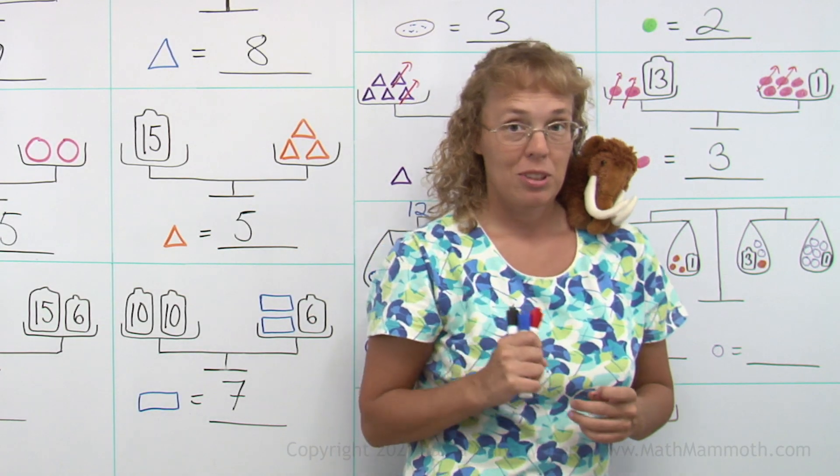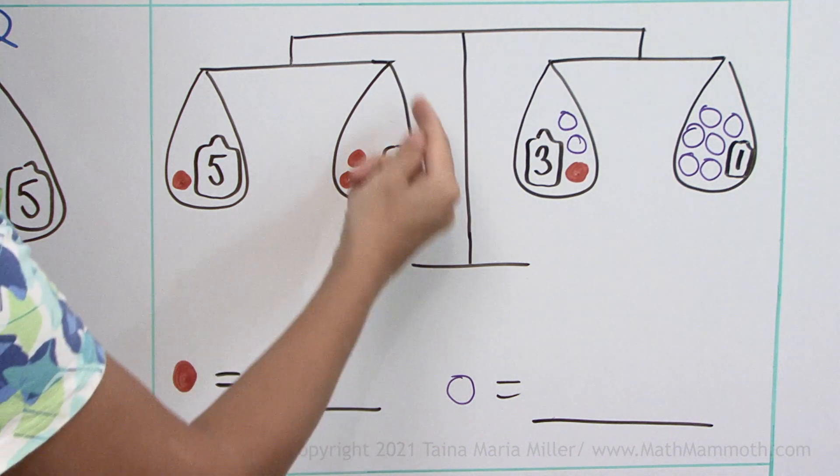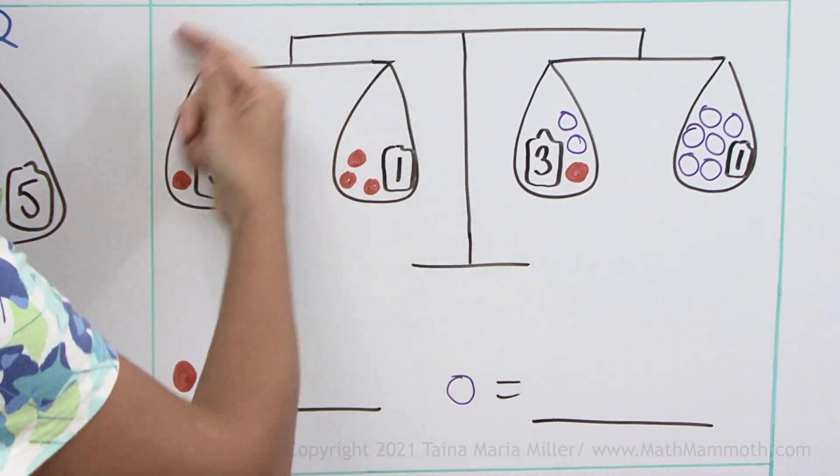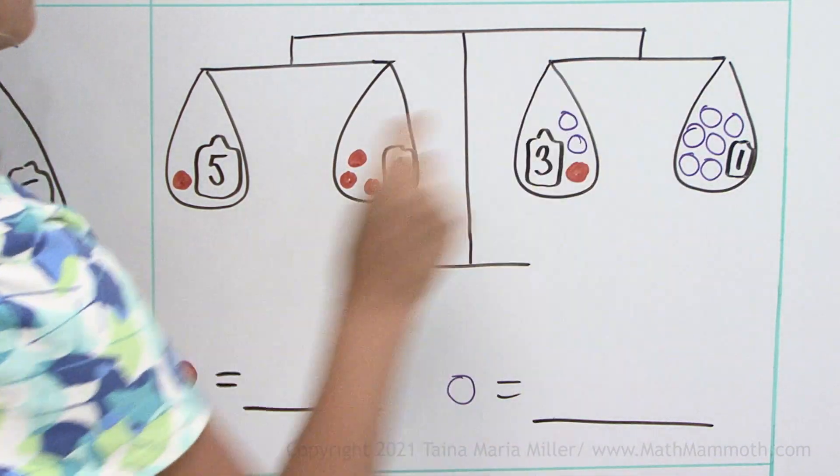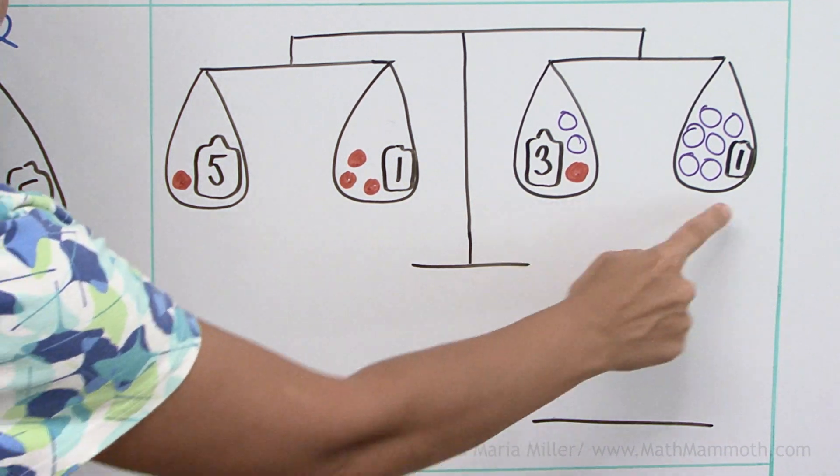Here is a double scales too. Again, the same principles apply. This side, all of this weighs the same as all of this. But individually, this side weighs the same as this. And then this side, the same as that.